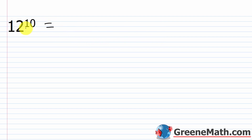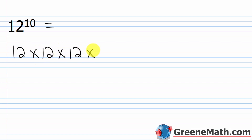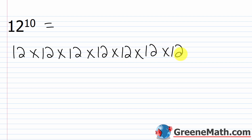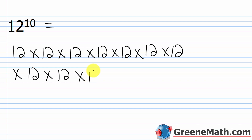What about 12 to the 10th power? I'm going to have 10 factors of 12. The base is 12 — that's the number being multiplied by itself — and 10 is the exponent telling me how many. So this is 12 times 12 times 12 times 12 times 12 times 12 times 12 times 12 times 12 times 12: 10 factors of 12.